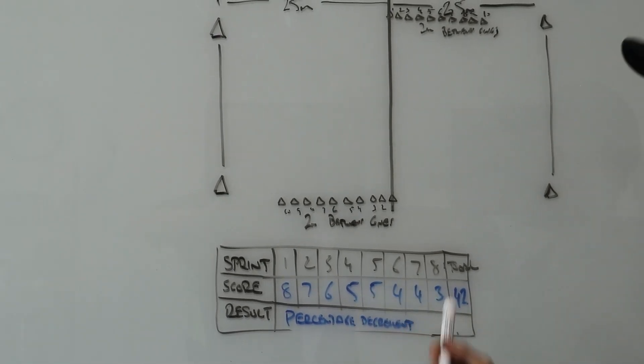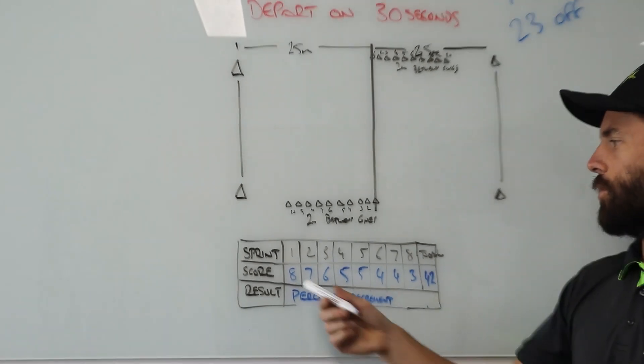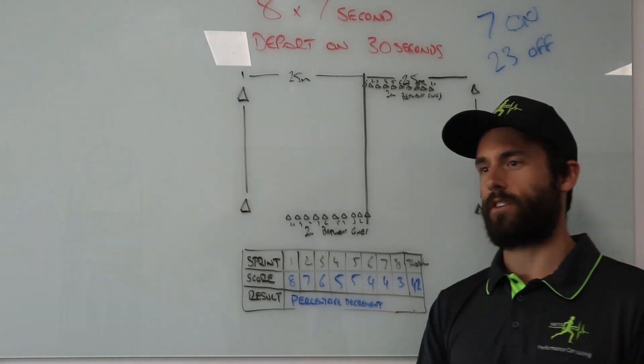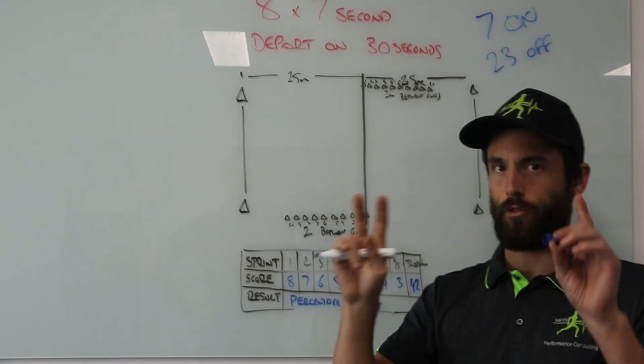We had a slight drop off, third sprint got past six cones, five and five, four four three. Then the way this test gets measured, we look at what you could have done, so eight was your best.